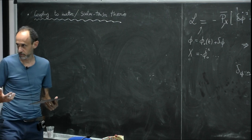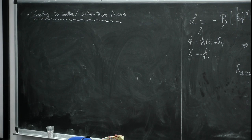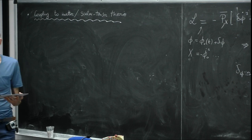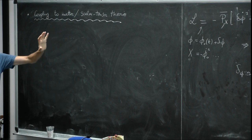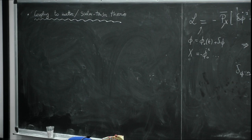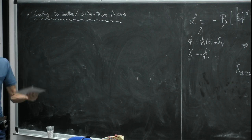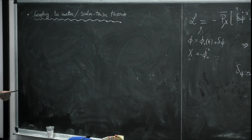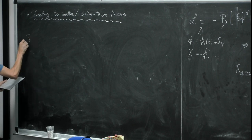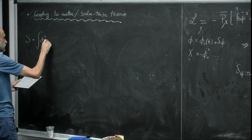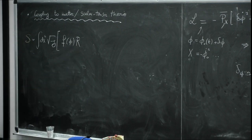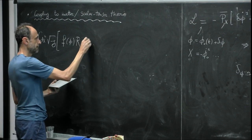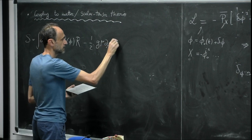We want to study if the scalar field can couple to matter. If it does, it should couple to all matter species in the same way, because we have tight constraints on the equivalence principle. Light scalar fields mediate a fifth force, so in order for objects to fall the same way, all objects must couple to the scalar field in the same way. The traditional approach is to put a function F(φ) of the scalar field in front of the Ricci scalar in the action, plus a standard scalar field action, plus a matter action minimally coupled to the gravitational metric.